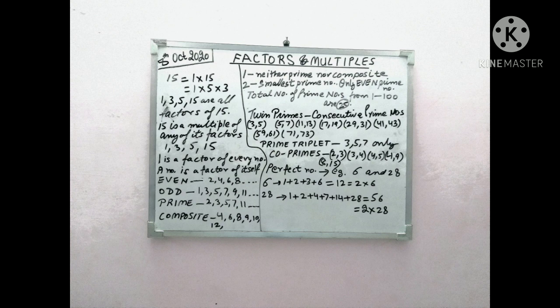Next we have composite numbers. The numbers which have more than 2 factors are known as composite numbers. For example, 4, 6, 8, 10, 9, 12, 14, these are all examples of composite numbers.